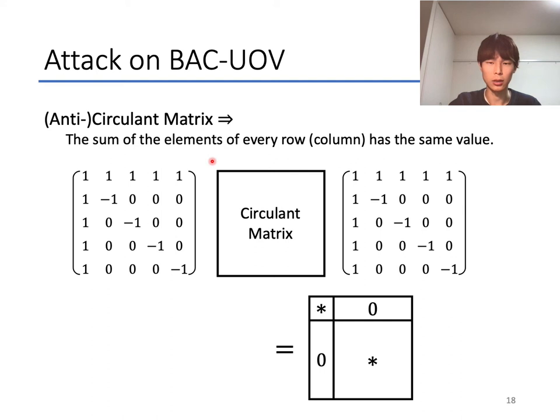The attack on BAC-UOV utilizes the property that the sum of the elements of every row and column is the same as those of other rows and columns. By using this property, we can execute the transformation like this. For any circulant matrix, we multiply this symmetric matrix, whose every element of the first row and column is 1, and other diagonal elements are -1 from both sides. And then it becomes this form, whose every element of the first row and column is 0, except the (1,1) element.